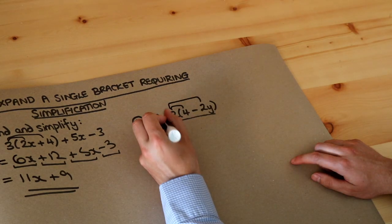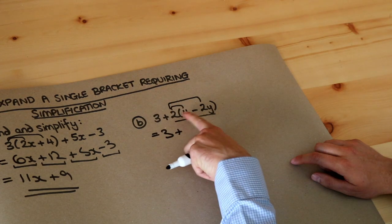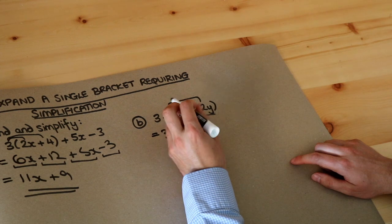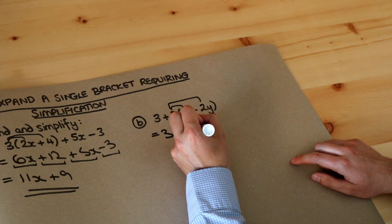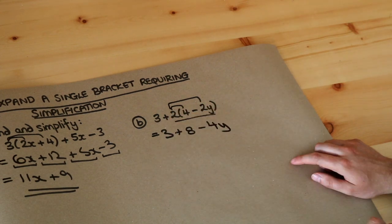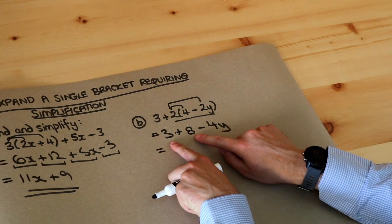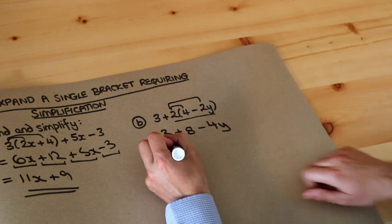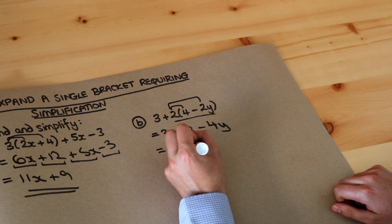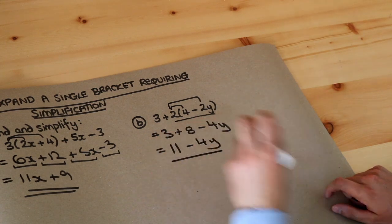So we get 3 plus 2 times 4 is 8, 2 times minus 2y is negative 4y and then we just collect like terms. Well these are two constant terms without an x. 3 plus 8 is just 11 and we've got 11 minus that 4y and that is the final answer.